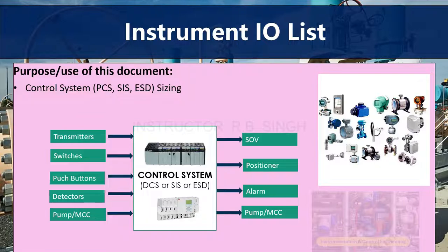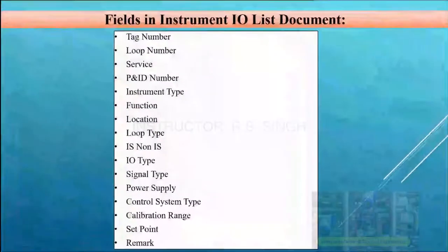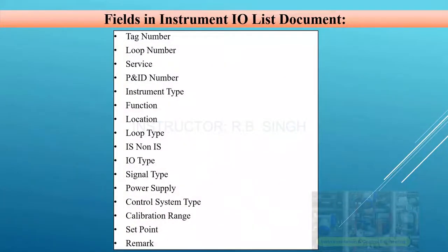By these many types of signals, our plant can be operated. In this document, we will consider all these signals in a documentation format. Whenever you make an IO List document, certain fields are required — similar to how we prepared the instrument index — and these are the important fields needed to prepare the IO List.